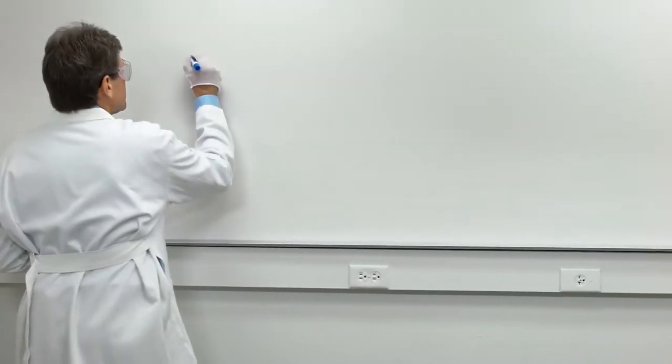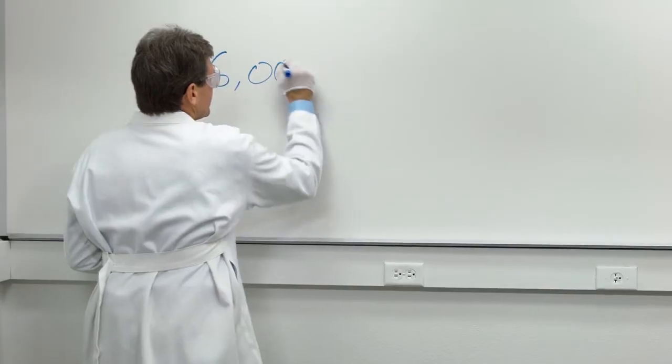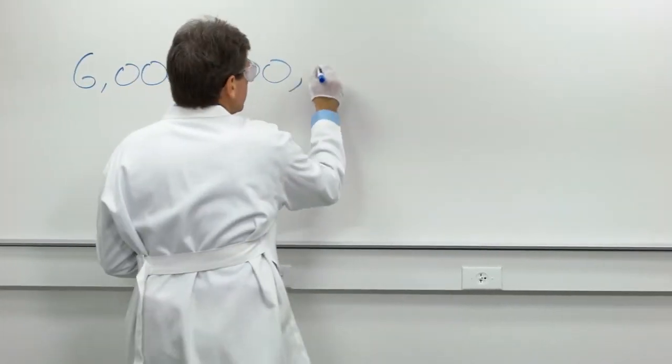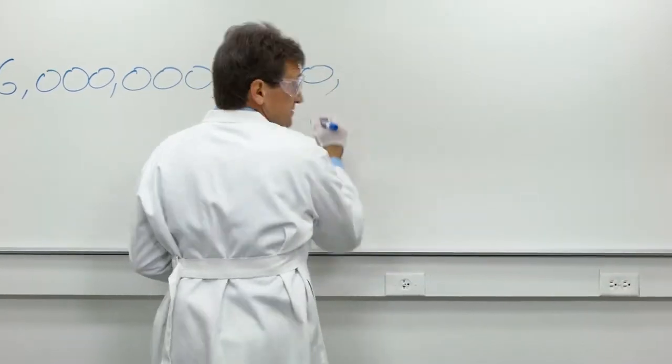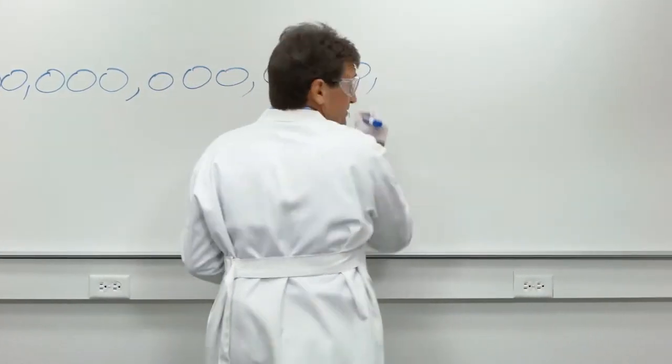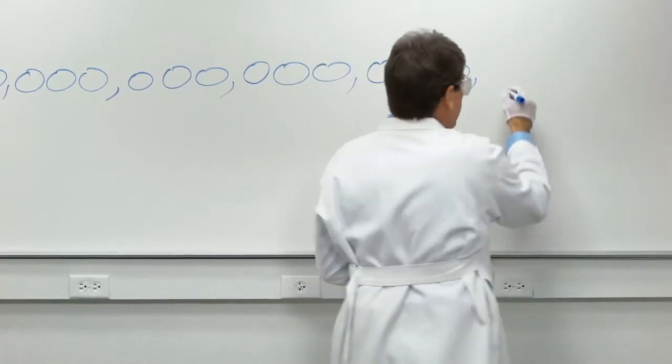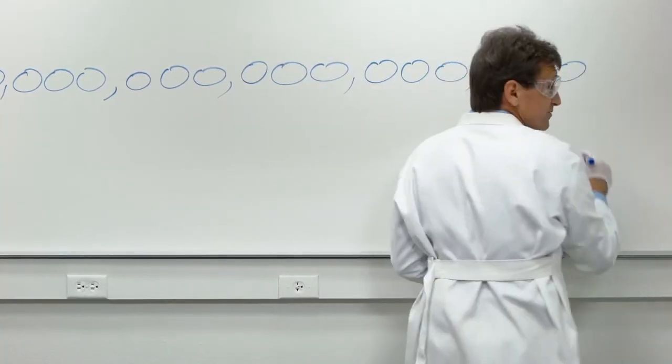In fact, to get just one ampere of electricity, the unit we use to measure the flow of electricity, requires over six quintillion electrons all flowing per second.